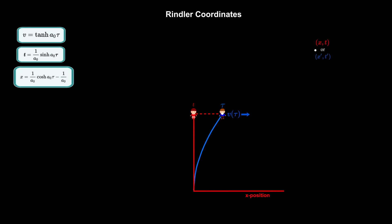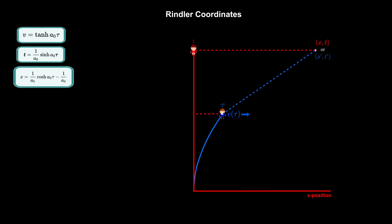Let's draw a dotted red line from the event to Alice's time axis to help us visualize the coordinates according to Alice, and a dotted blue line from the event to Bob's time axis to help us visualize the coordinates according to Bob. Remember from a previous video that Bob's x' axis is not horizontal in Alice's rest frame, but rather has slope v. This is why we draw a line of slope v to represent Bob's x' axis.